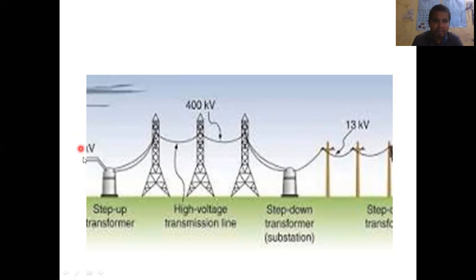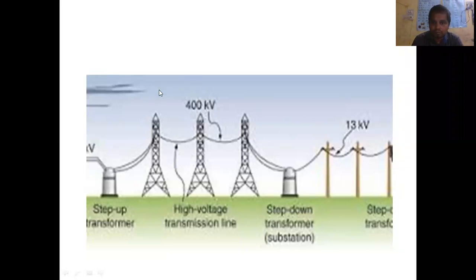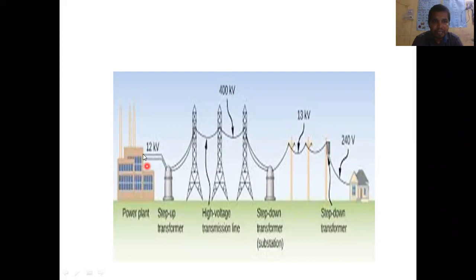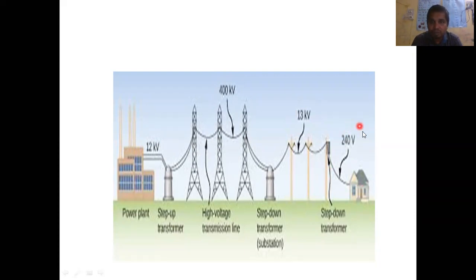A typical system will have power generation, step-up transformer, power transmission, step-down transformer, and power distribution. A typical representation of the power system: a power plant — anything, like a photovoltaic cell. You can see a solar power plant where 12 kV is generated, then a step-up transformer steps it up to 400 kV. Through the transmission line, it is stepped down further in the substation to 13 kV, then stepped down further for the distribution level to 240 volts.